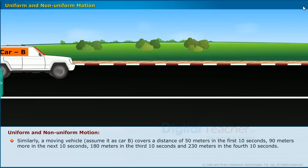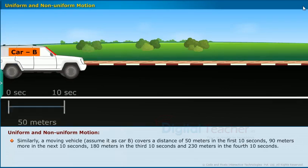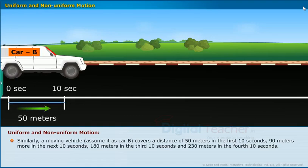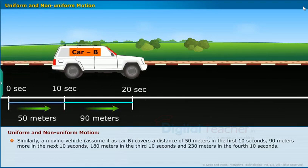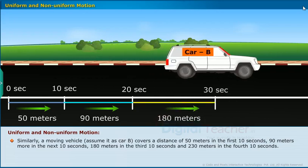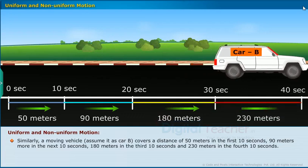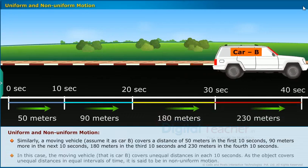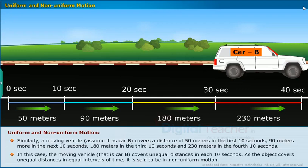Similarly, a moving vehicle, assume it as car B, covers a distance of 50 meters in the first 10 seconds, 90 meters more in the next 10 seconds, 180 meters in the third 10 seconds, and 230 meters in the fourth 10 seconds. In this case, the moving vehicle, car B, covers unequal distances in each 10 seconds. As the object covers unequal distances in equal intervals of time, it is said to be in non-uniform motion.